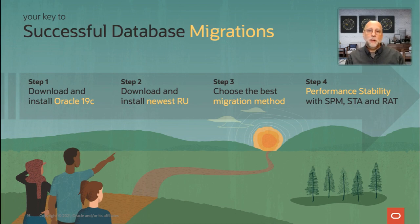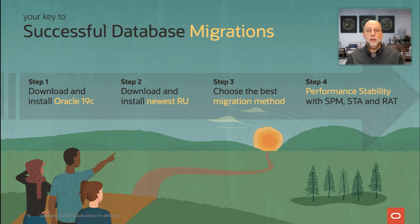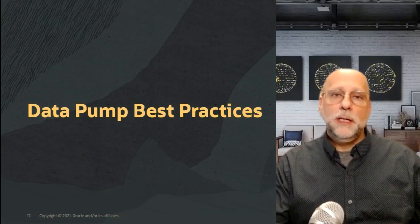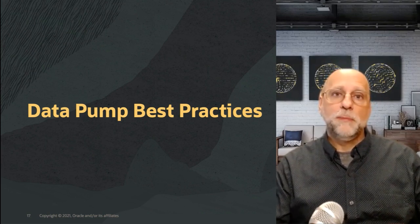The key to a successful database migration is to follow this very simple set of four steps. One, be on the right version — and that means database 19c. Two, make sure you're on the most recent release update, to get the most complete and current set of security and functional fixes for your database. Three, choose the right migration method — getting the right tool for the job in a particular scenario is very important. And four, use the tools that are available at your disposal, some of them free like SQL plan management, others like widely adopted packs such as the tuning pack, to make sure that you have good performance after your migration. So without further ado, let's get into the deeper topics like data pump best practices, which will be discussed by Bill Beauregard.